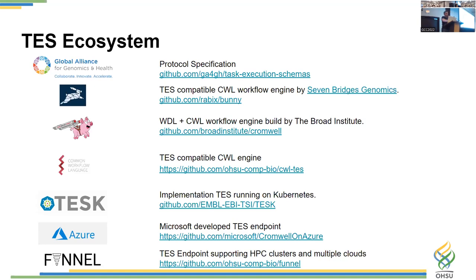From the workflow side, and from the production or service side, there are a number of different implementations to make this service available. We see one written by ELIXIR in Europe that deploys onto Kubernetes clusters, an endpoint packaged into Cromwell's implementation, Microsoft's implementation of Cromwell on Azure, and also a packaged system called Funnel that my team worked on, which handles a whole bunch of HPC environments and systems like AWS Batch. So a lot of different clients and servers are speaking this protocol.